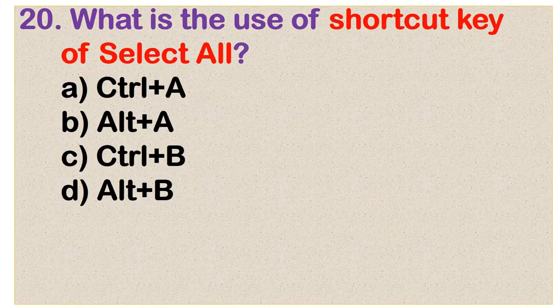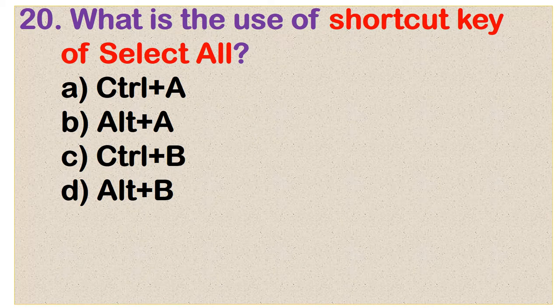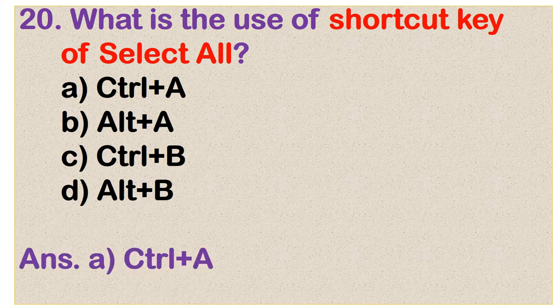Question number 20: What is the shortcut key to select all? Options are Control plus A, Alt plus A, Control plus B, and Alt plus D. And the correct answer is option A: Control plus A.